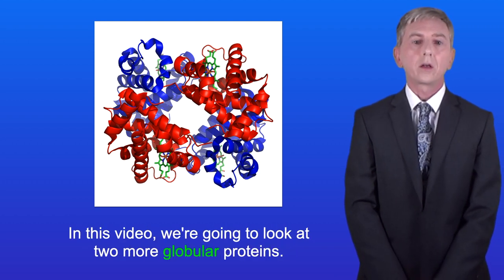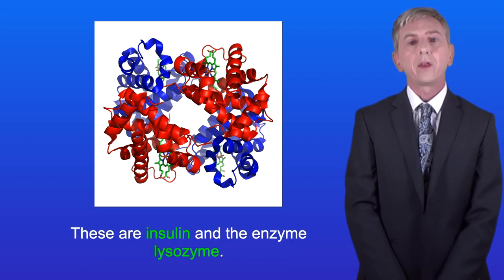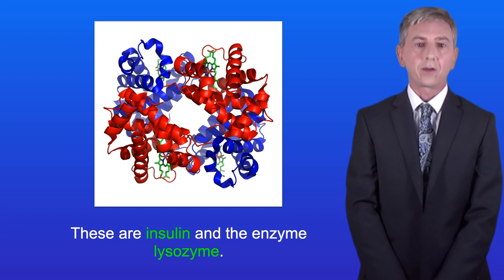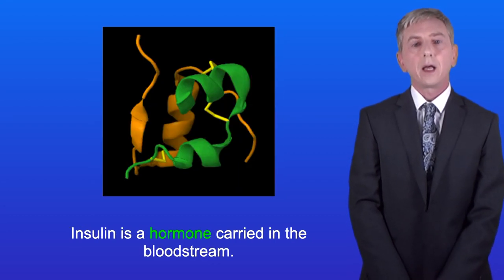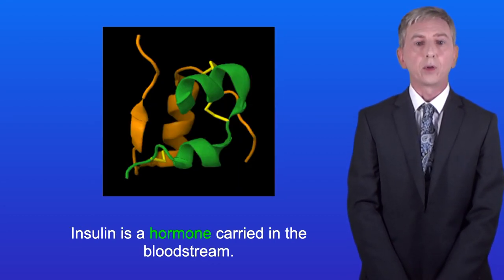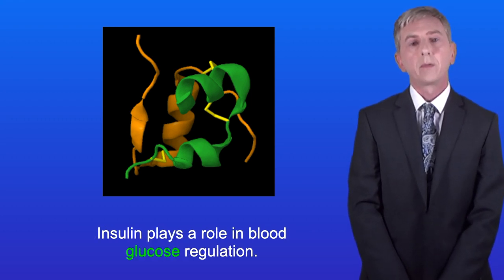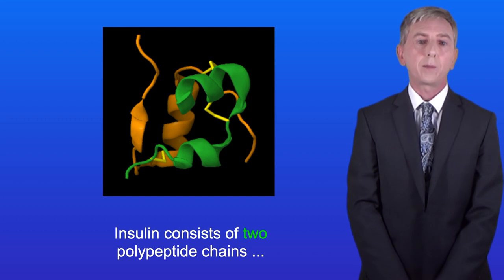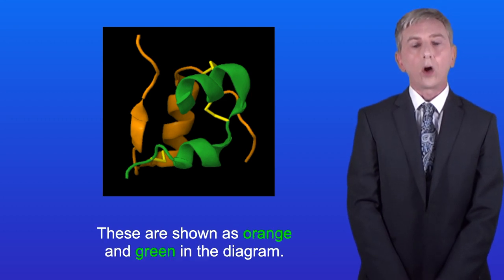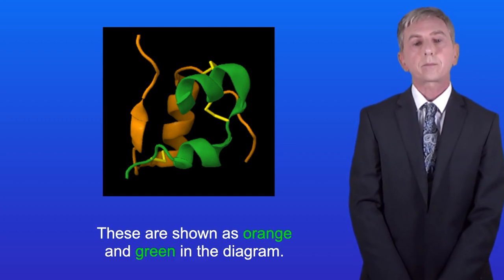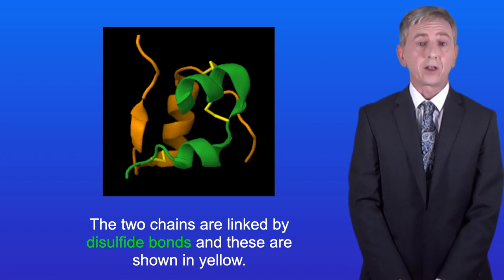In this video we're going to look at two more globular proteins: insulin and the enzyme lysozyme. Insulin is a hormone carried in the bloodstream and plays a role in blood glucose regulation. Insulin consists of two polypeptide chains, shown as orange and green in the diagram. The two chains are linked by disulfide bonds, shown in yellow.